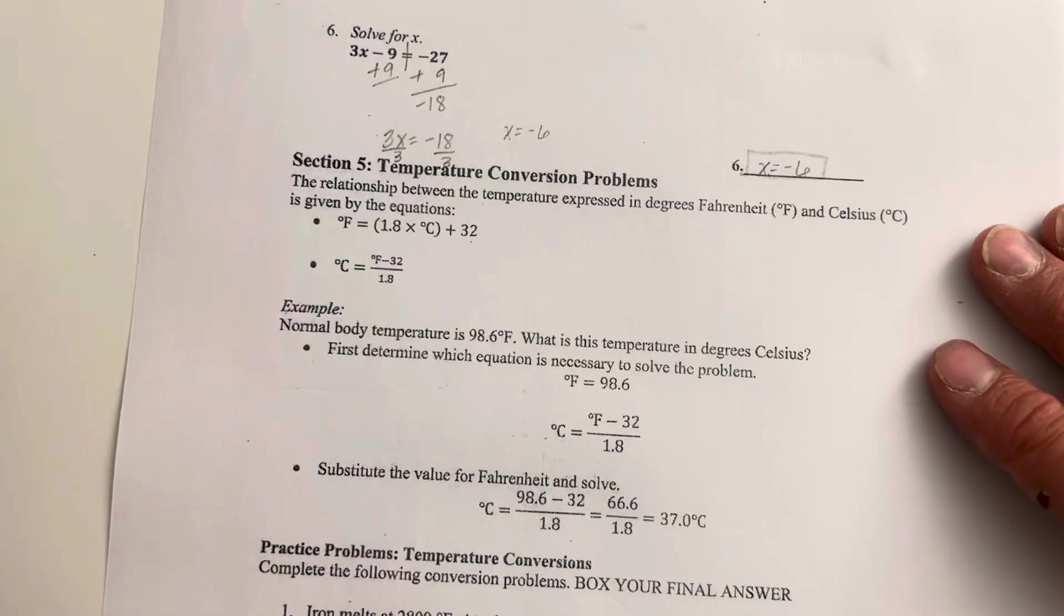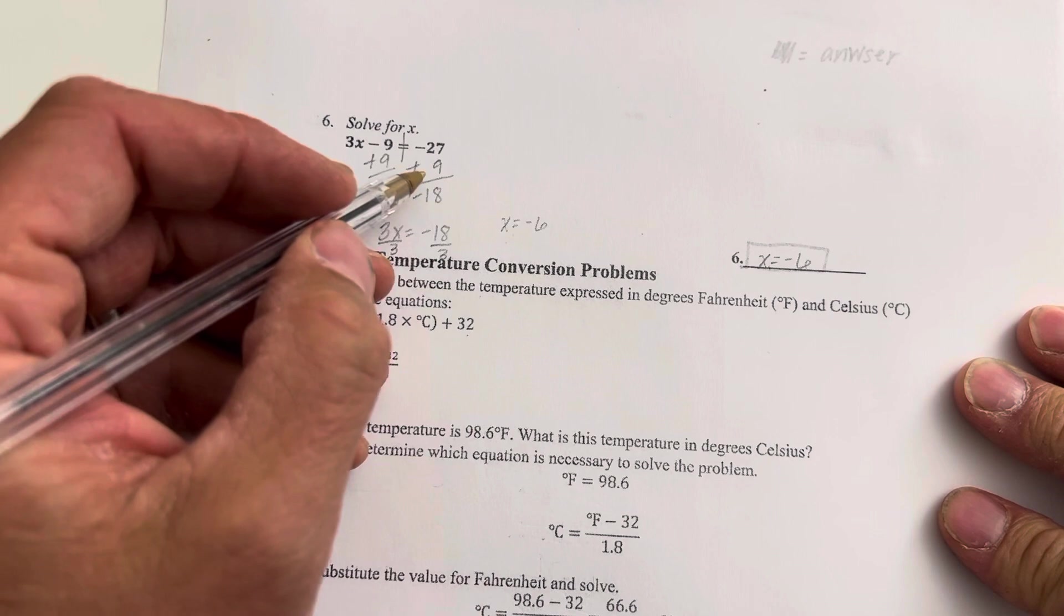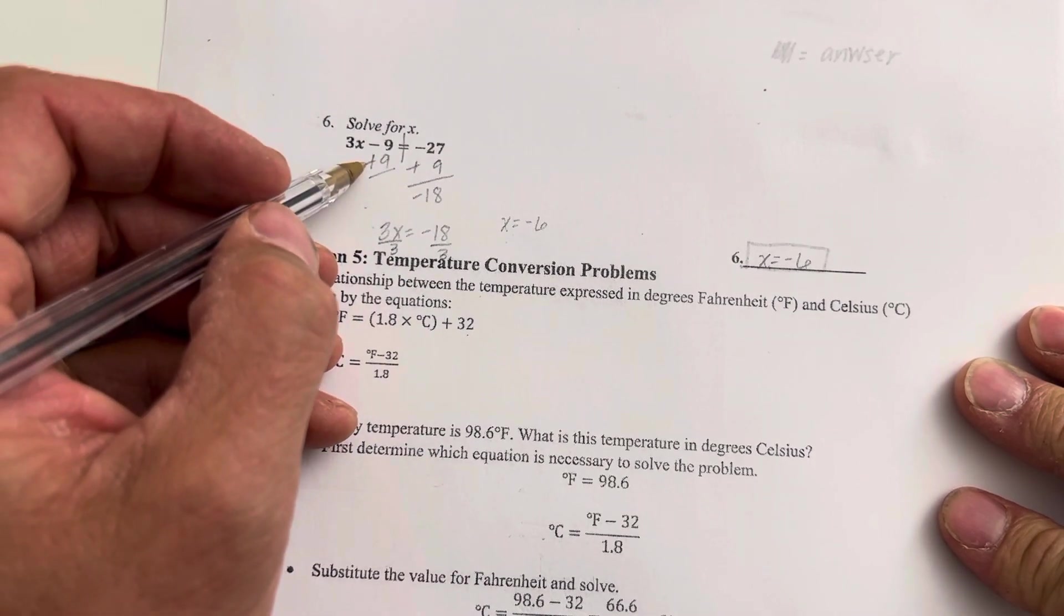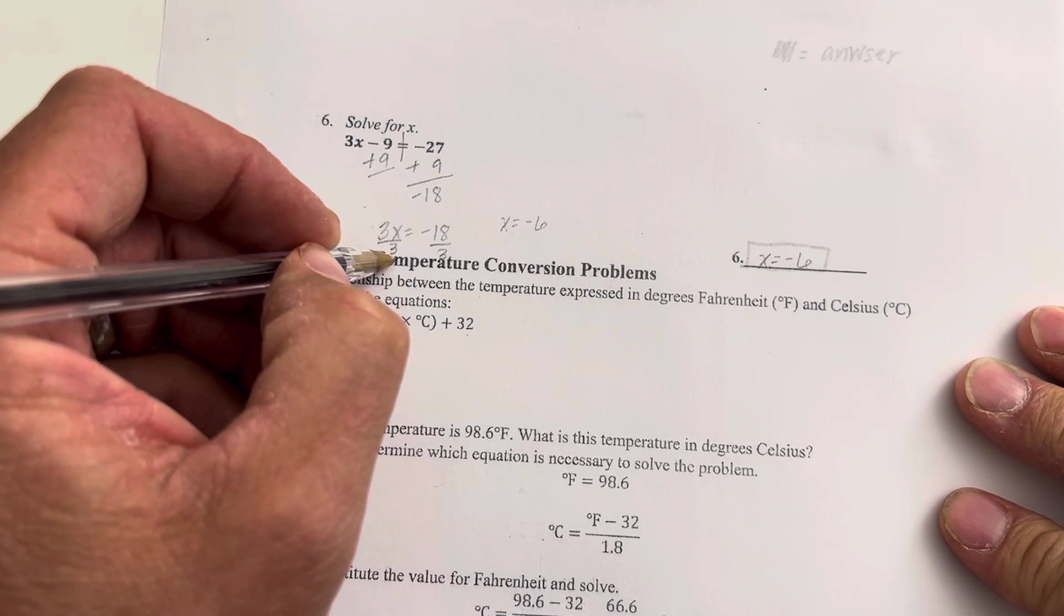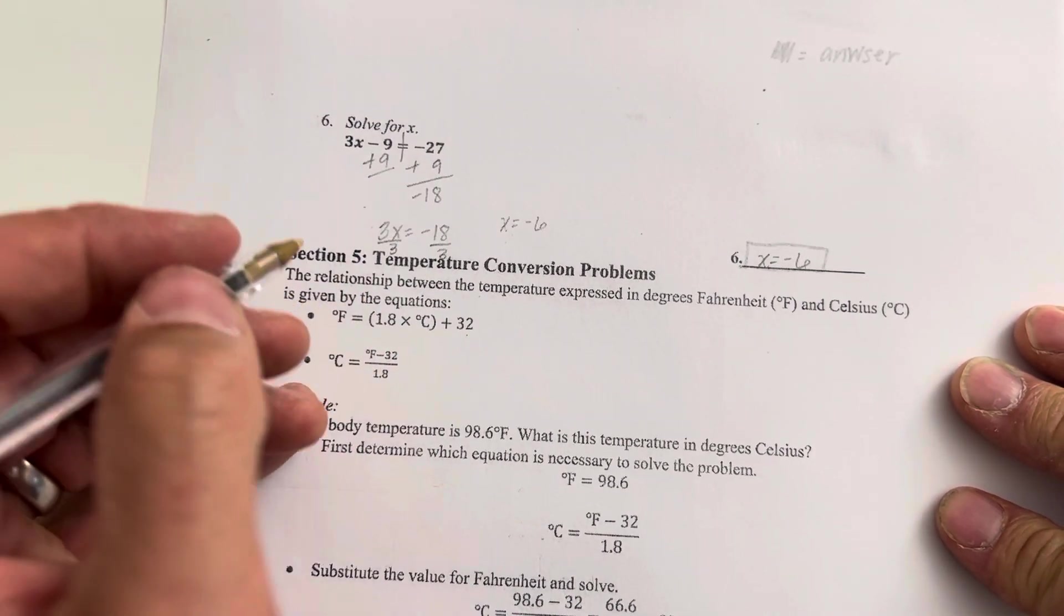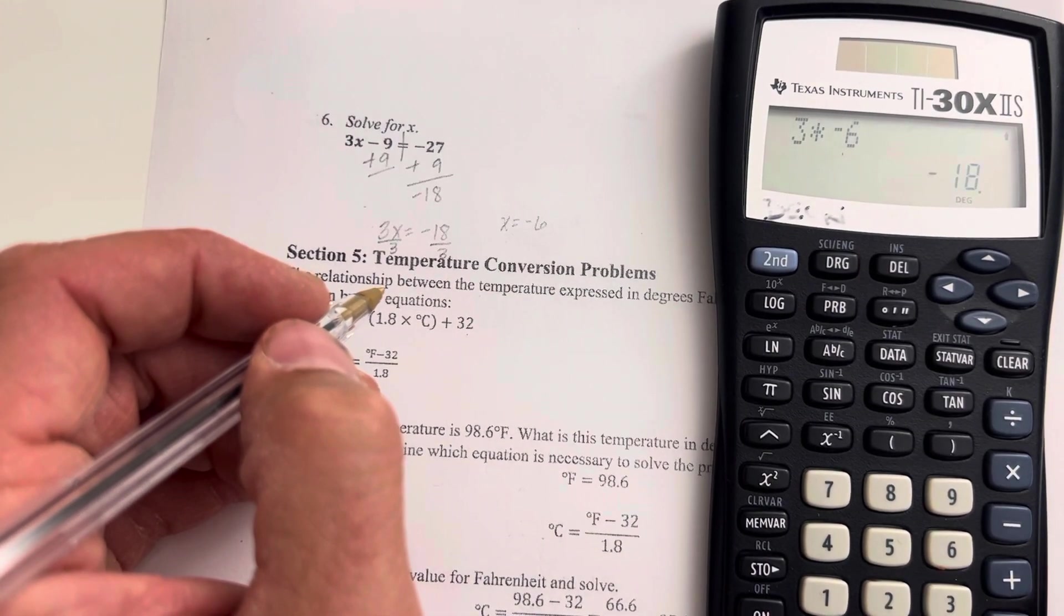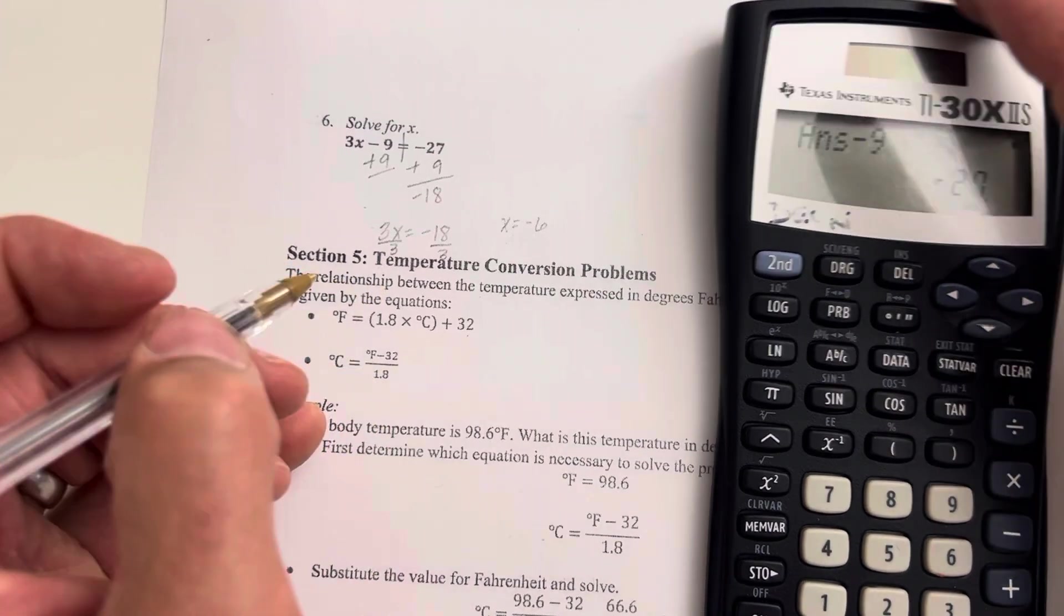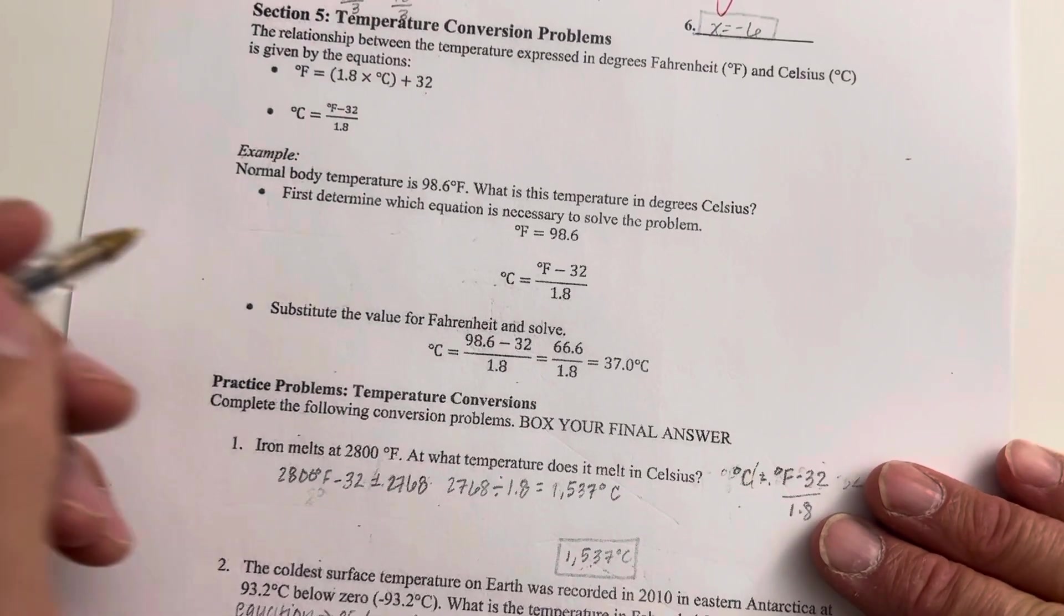For this one here, 3x minus 9. 3x minus 9 is equal to negative 27. So you're right, you would add 9 to both sides. So that would give you 3x is equal to negative 18. Divide by 3. Negative 18 divided by 3 gives you negative 6. So that seems reasonable. If we take 3 times negative 6 and then we subtract 9, it gives us negative 27. So this one would be correct.